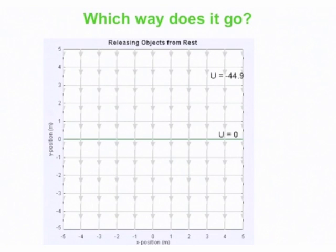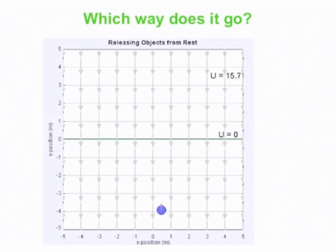In this case, the negative charge does not accelerate in the direction of the field — it accelerates in the direction of the force, which is opposite to the field. The potential energy went from about minus 18 to minus 45, so it moved in the direction of decreasing potential energy. A velocity vector comes out of the ball as it falls, increasing as time goes by.